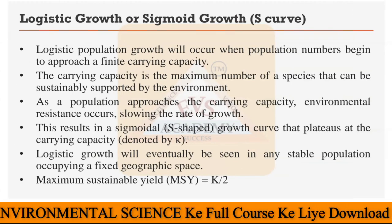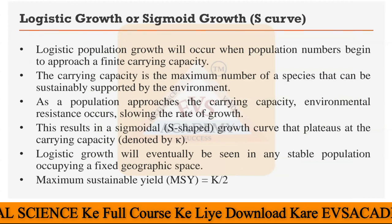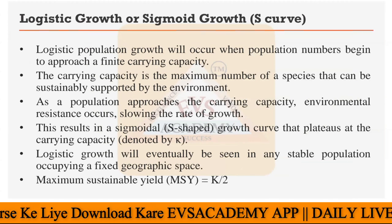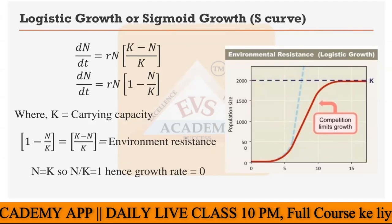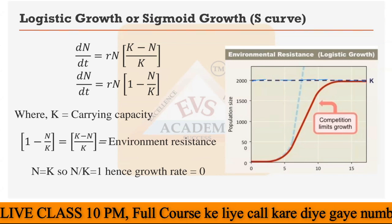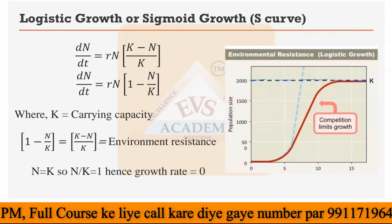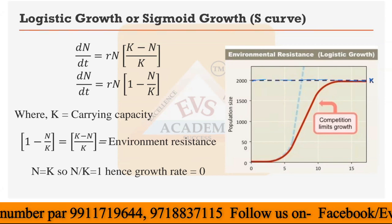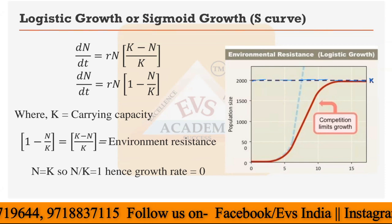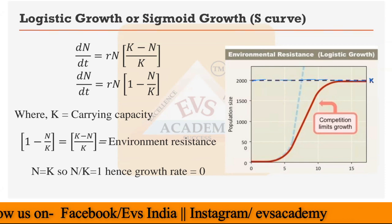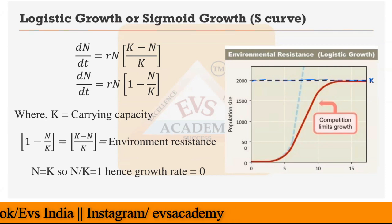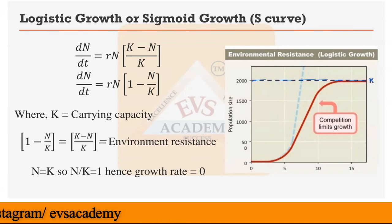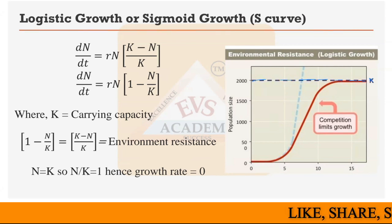Logistic population growth will occur when population numbers begin to approach a finite carrying capacity. In the graph you can see the population is reaching a fixed level and will not increase beyond that. This level is termed K, which is the carrying capacity. It means the environment or ecology cannot sustain more than this number of individuals — this is the maximum number that can exist in a particular environment.